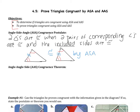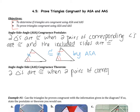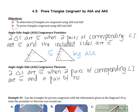Similar to that is AAS. AAS says that two triangles are congruent when two pairs of corresponding angles are congruent and a pair of non-included sides are congruent.